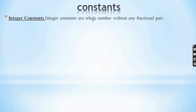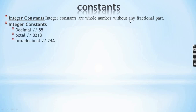Integer constants are whole numbers without any fractional parts. Examples of integer constants are: decimal (base 10), octal (base 8), and hexadecimal (base 16).